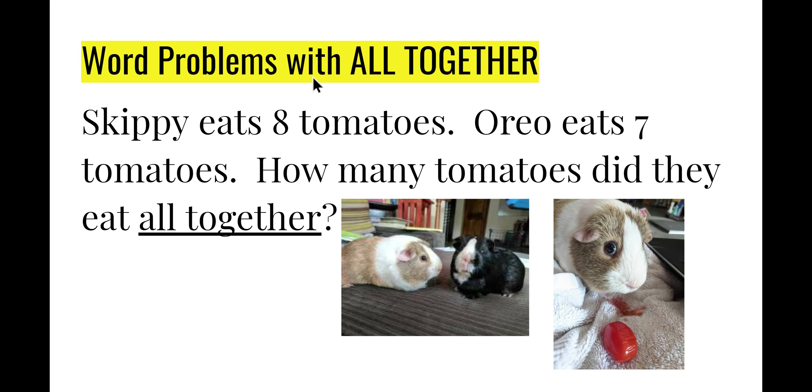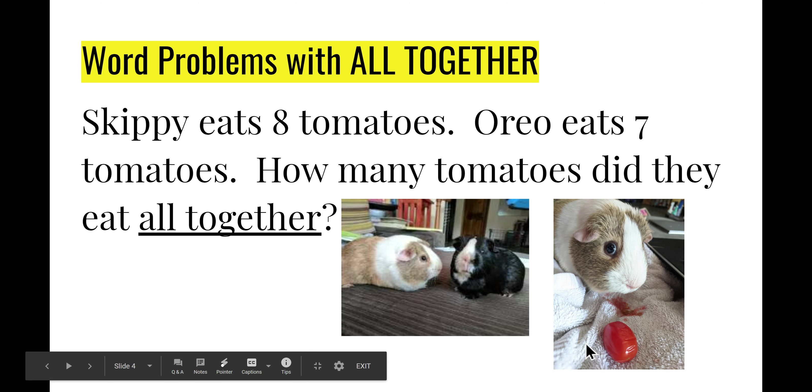Let's read a word problem with all together. Skippy eats eight tomatoes. Oreo eats seven tomatoes. How many tomatoes did they eat all together? This is Skippy. This is Oreo. They are guinea pigs and they love tomatoes. Look how happy Skippy is to have his tomato.